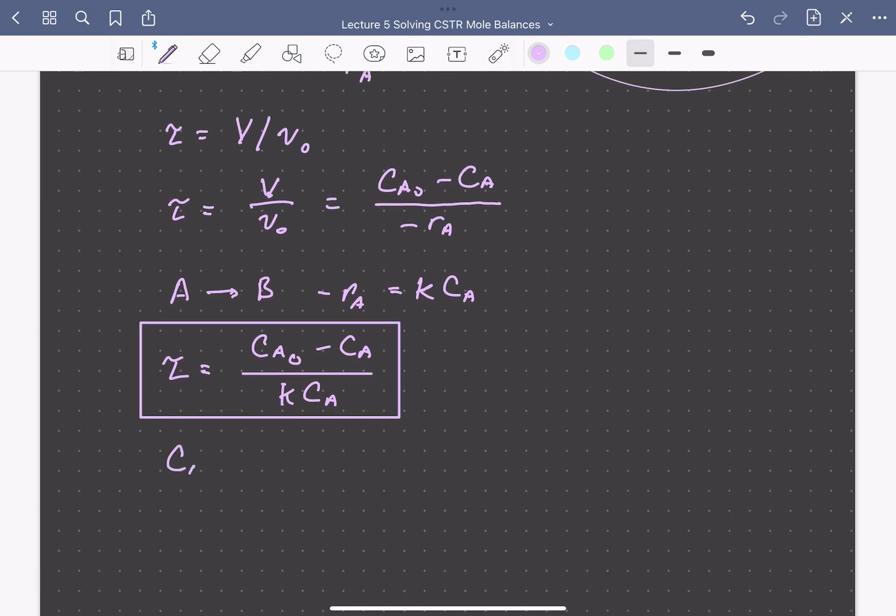We can also solve this explicitly for the concentration of A. This is going to be equal to CA0 over 1 plus tau times the reaction rate constant K.